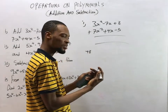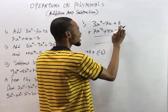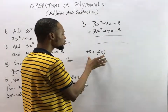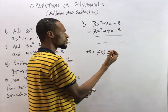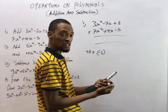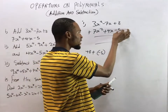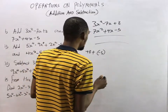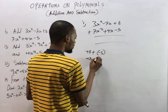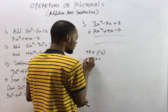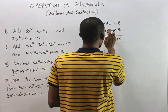We are adding, so the operation between the two polynomials is plus. The constant terms are +8 and -5. Plus times minus gives minus, so this becomes 8 - 5, which equals 3. So our constant term is +3. Now for the s terms: -7s and +4s.